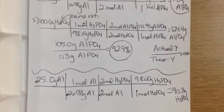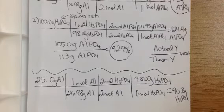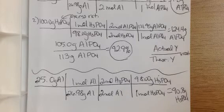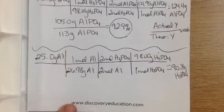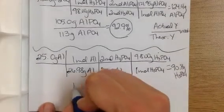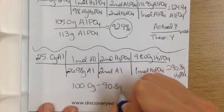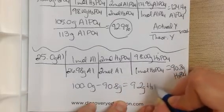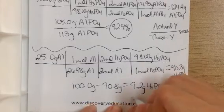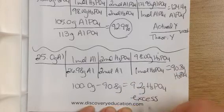Remember in the very beginning question, it said that I had 100 grams of phosphoric acid. So therefore, I can also figure out how much acid is left over. So if I have 100 grams minus 90.8 grams of phosphoric acid, then I have 9.2 grams of H3PO4 left over. So this is how much excess phosphoric acid I have.